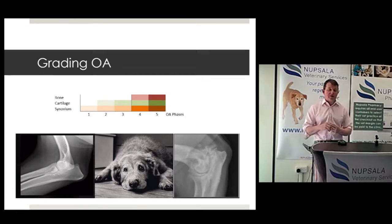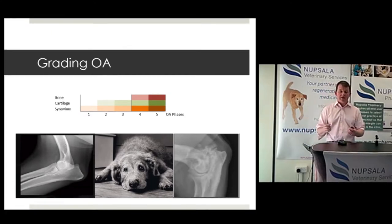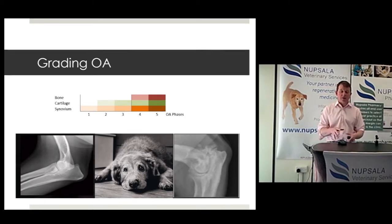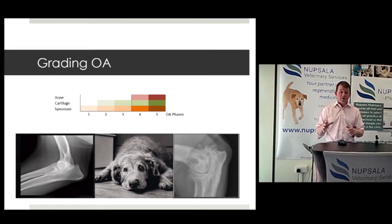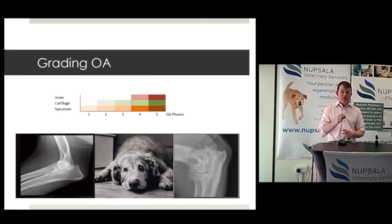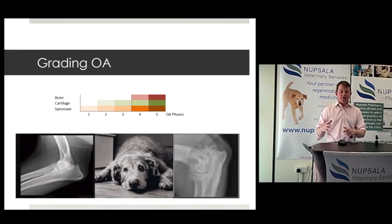Try to get into the habit in your practice and clinical recording of giving a grade, so that anybody else looking at this dog can understand it was classified as an OA dog. When you label it, encourage practices to do so upfront — so if that dog comes back for a vaccination or a different condition, it's flagged as an OA dog, prompting a disease review.